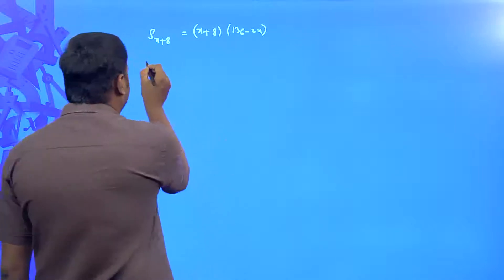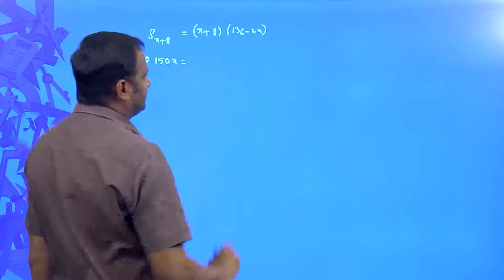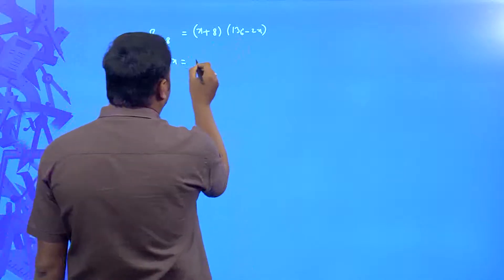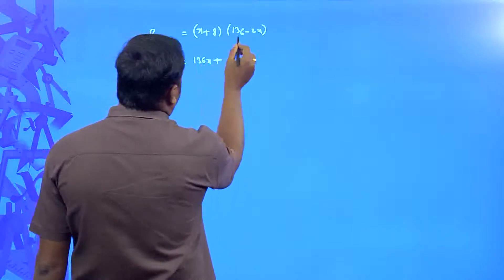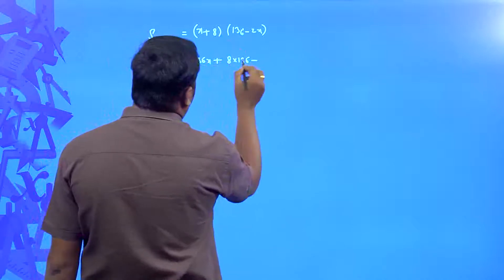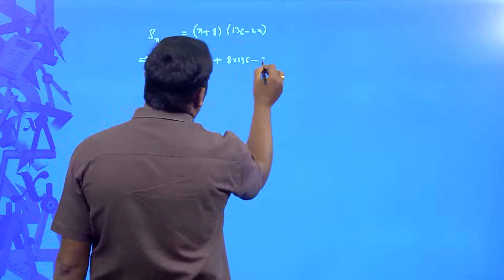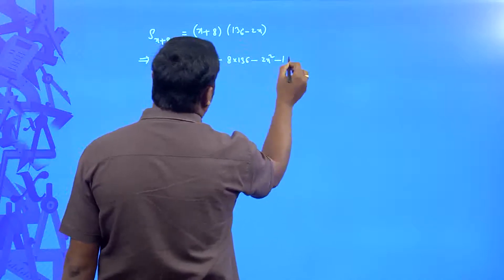So 150x should be equal to this term, that is x into 136 equals 136x plus 136 into 8, you do not have to multiply, minus 2x into x is equal to 2x square, plus into minus is minus 2, 8 are 16x.